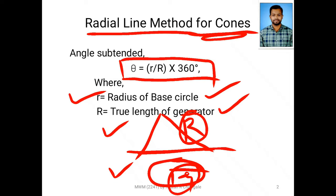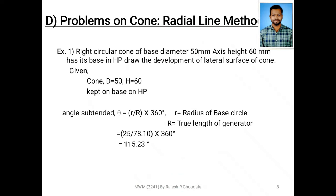We will see a simple problem first and then we will see a cone with square hole in it. The first problem is very simple. What is given? A right circular cone, base diameter 50 mm, axis height 60 mm is kept on HP. Cone is given, diameter is 50, axis height is 60 and it is kept on HP. Draw the development of lateral surfaces of cone. For this purpose we must know theta.